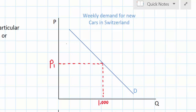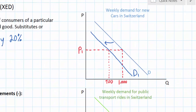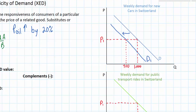Obviously fewer people will wish to buy cars at every price if the fuel for those cars becomes more expensive. In other words, the demand for cars will decrease when the price of oil rises — I'll call the new demand curve D1. The decrease in the quantity of cars demanded weekly in Switzerland resulting from the higher oil prices means the new quantity of cars demanded is 700 per week. We can now calculate the cross price elasticity of demand between oil and cars, which depend on oil in order to drive.